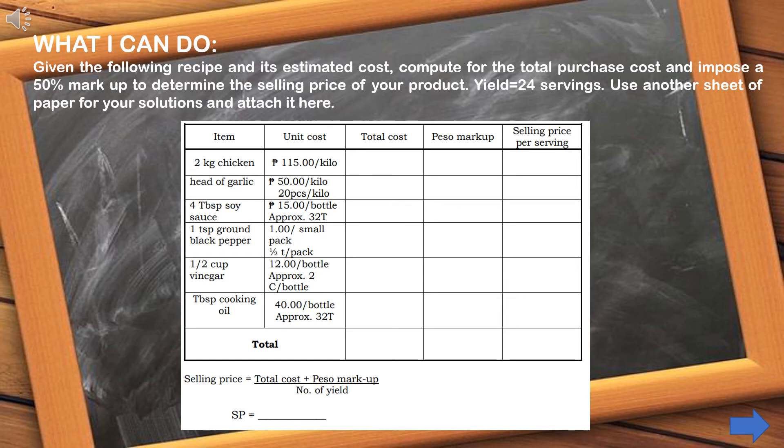On the 'What I Can Do' part: given the following recipe and its estimated cost, compute for the total purchase cost and impose a 50% markup to determine the selling price of your product. Yield equals 24 servings. Use another sheet of paper for your solutions. Write your answer on a separate answer sheet. Pause for a while to be able to answer this part.